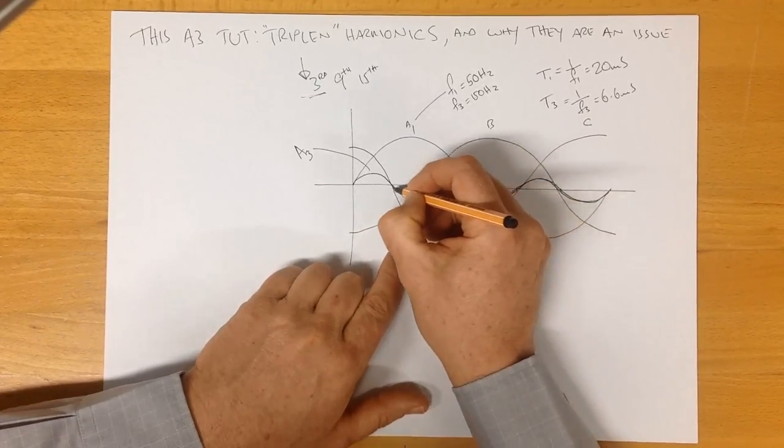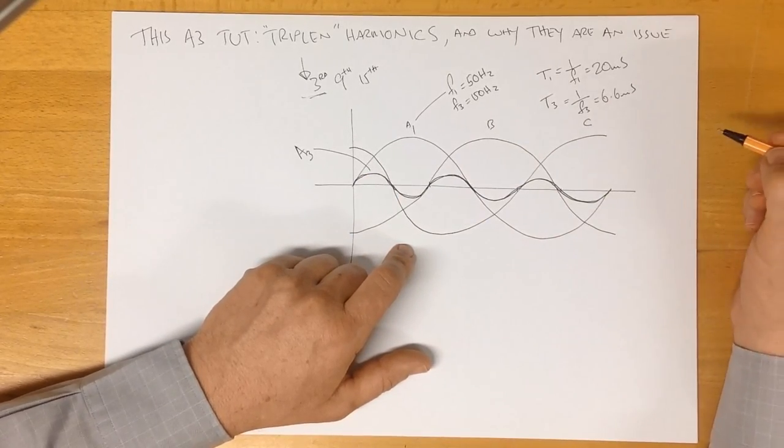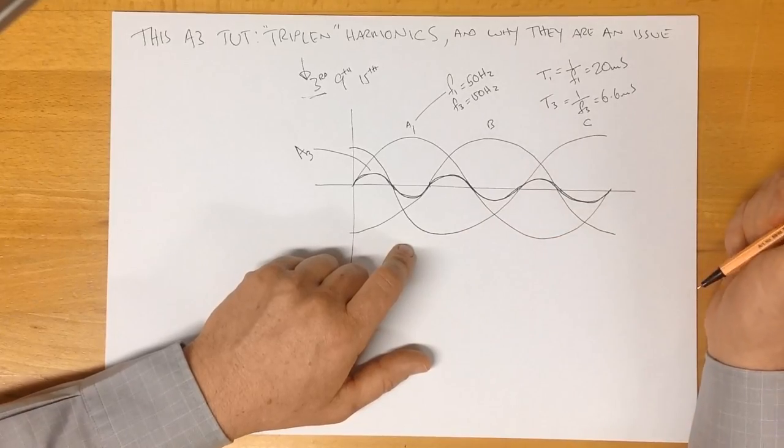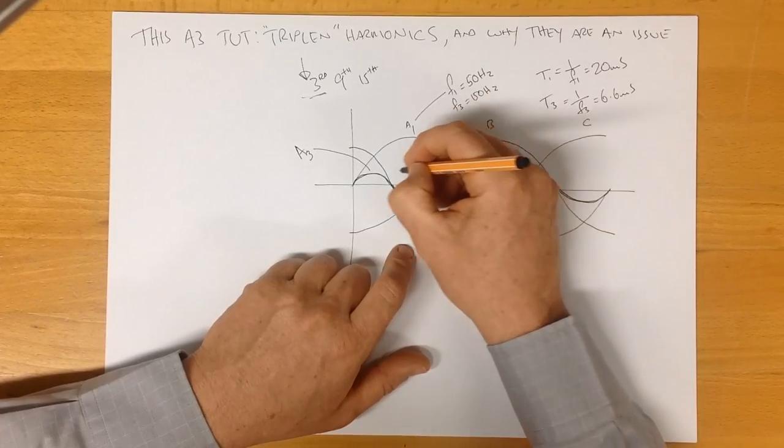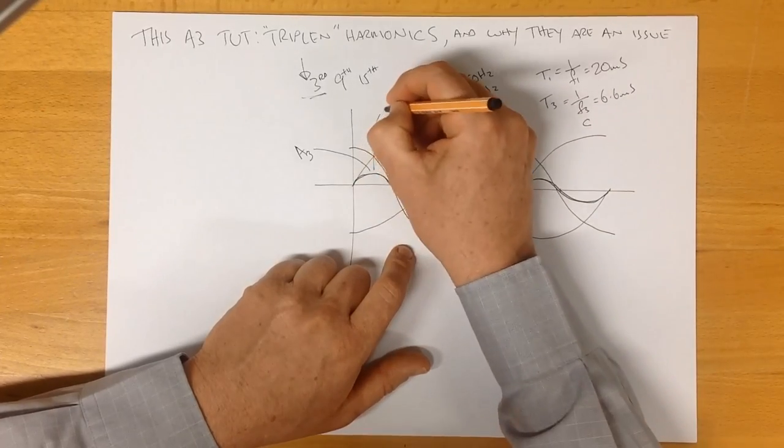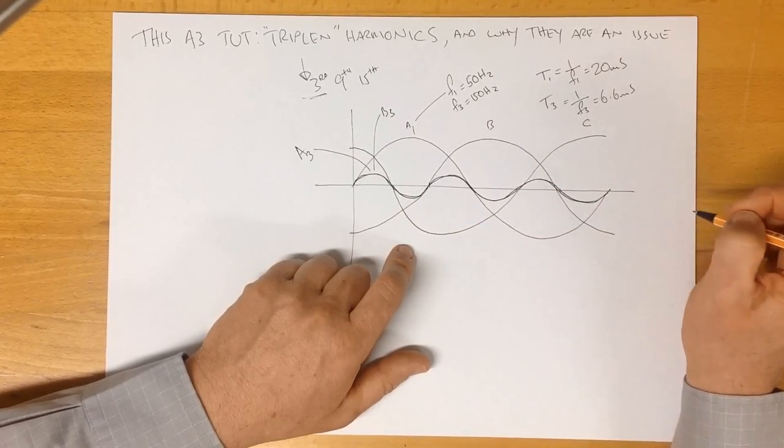And lo and behold, it's over exactly the same point in time. Again, if the amplitudes are a bit different, the amplitude will be a bit different. So we have also the third harmonic for the B phase.